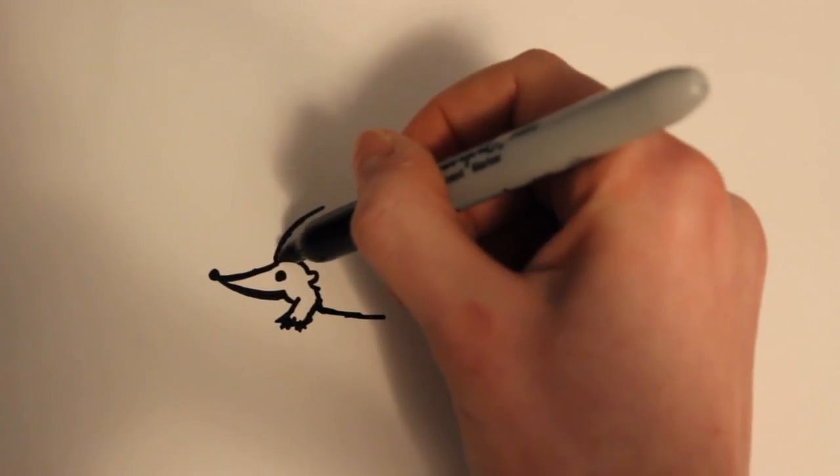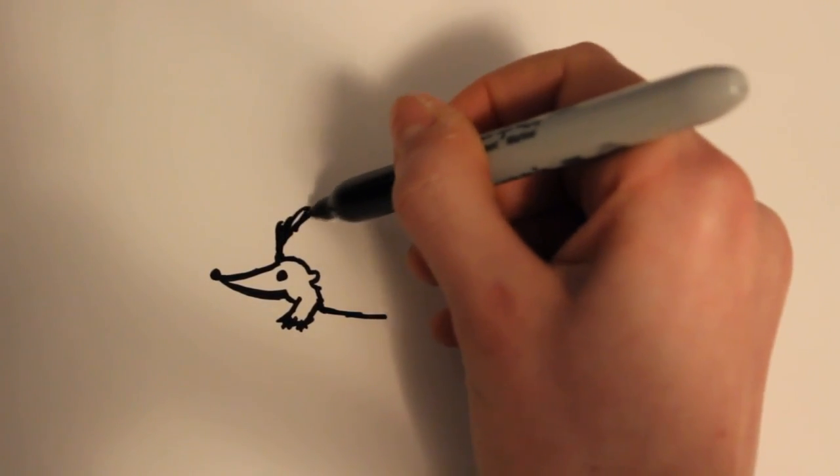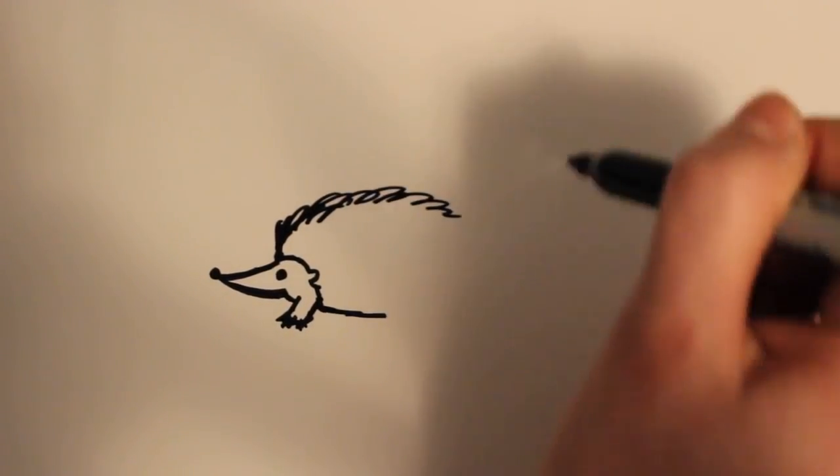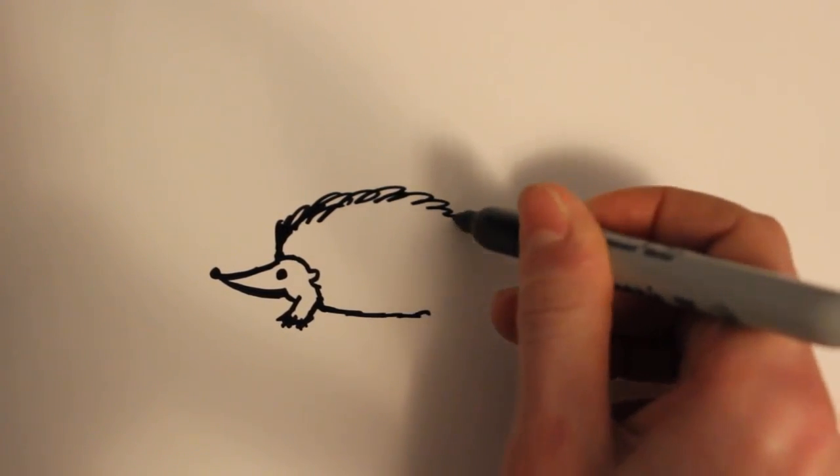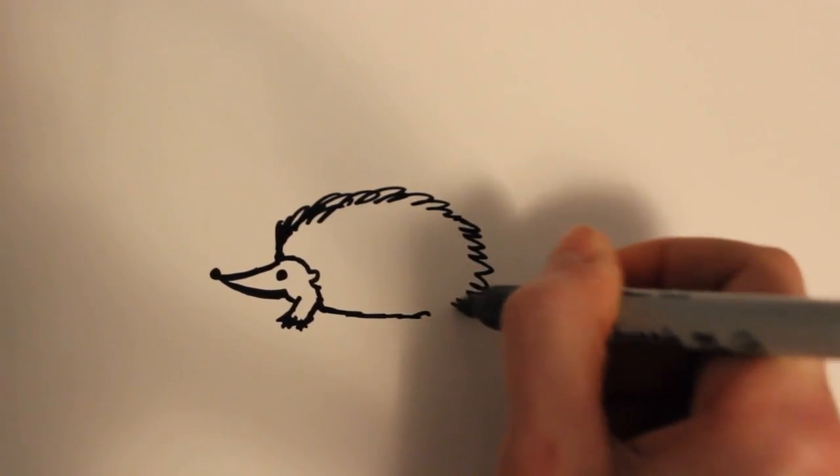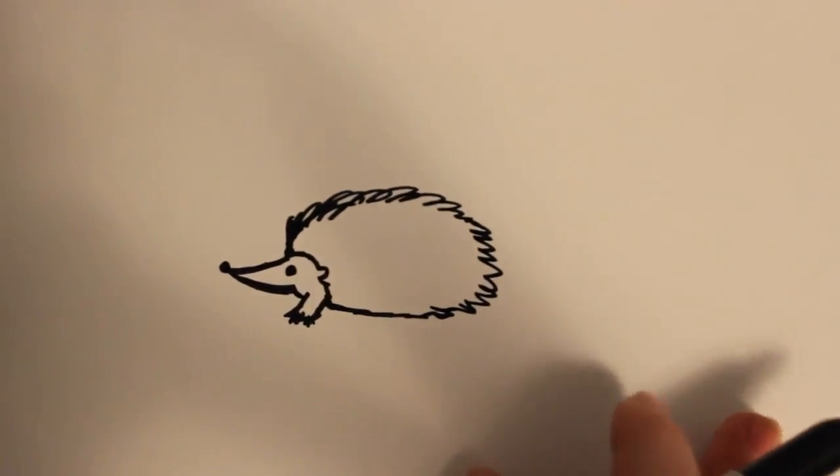Alright so then what this is is going to be the spikes, or the part that's going to go all the way around and look like his, I guess I don't really know what they're called, his hairs. So then you draw those all the way around.